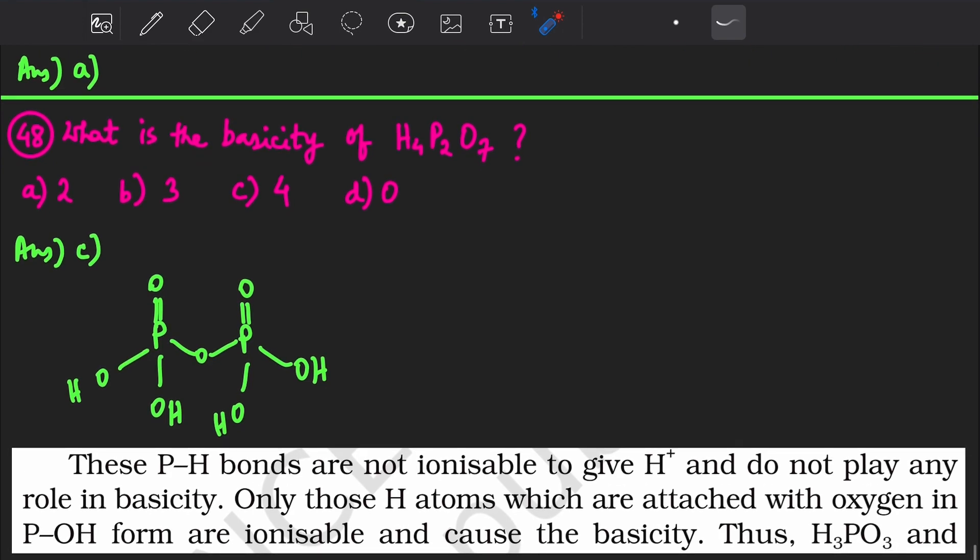Next is: what is the basicity of H4P2O7? Now you need to know the structure of H4P2O7. This is the structure. It has four OH groups, two P double bond O groups, and one P-O-P group.